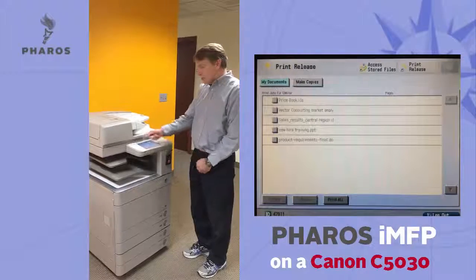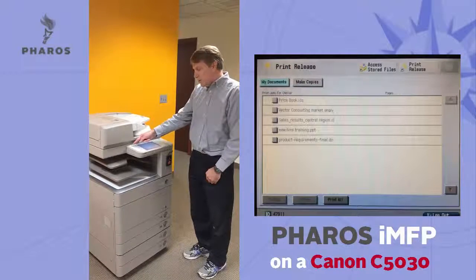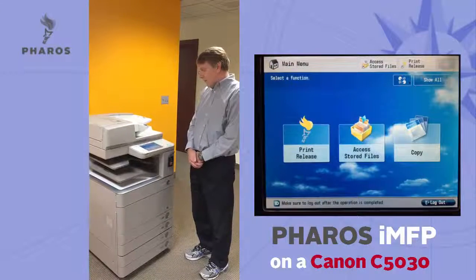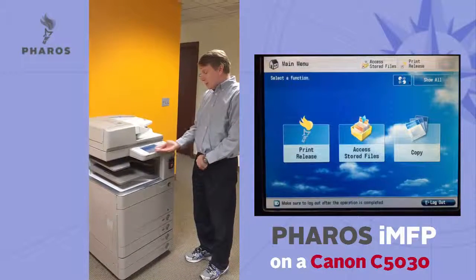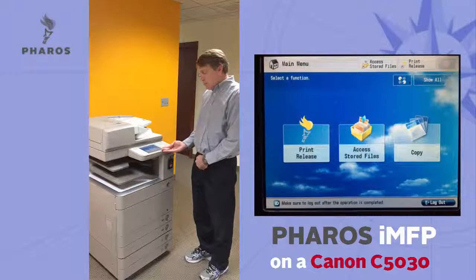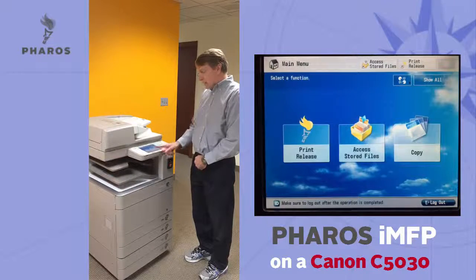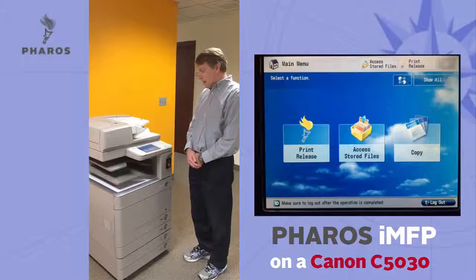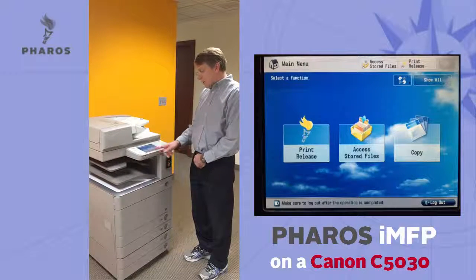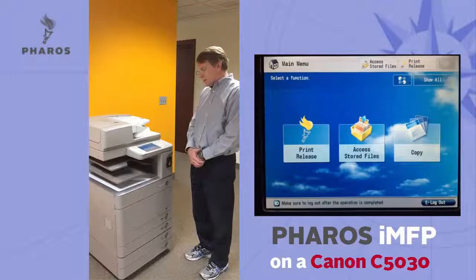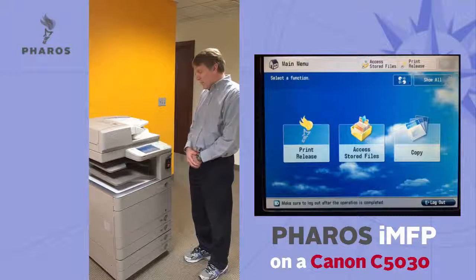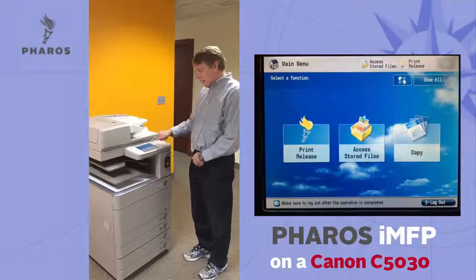I can also select the main menu button on the front panel and this brings me to the main menu of the Canon display. I see the print release button that got me in, and I also see the access to stored files on the copier and the copy application.